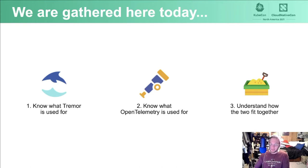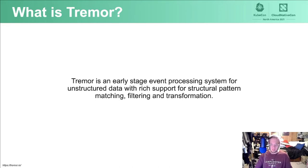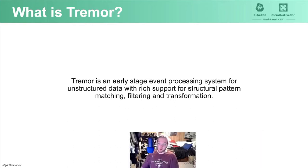Let's start with Tremor. Tremor is an early-stage event processing system for unstructured data with rich support for structural pattern matching, filtering, and transformation. I ripped that definition directly from docs.tremor.rs. Definitions are fantastic to start with because they show you how many words don't make sense together.